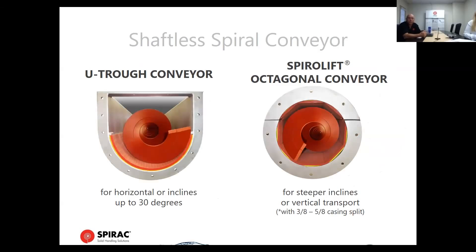Here are a couple different trough configurations. The one on the left is a U-trough conveyor — typical. We use that for up to 30 degrees, sometimes 35 degrees. When we go from 30 or 35 degrees to 45 degrees, we use the octagonal trough configuration, as well as in vertical applications. Both units are pretty robust and fully sealed.